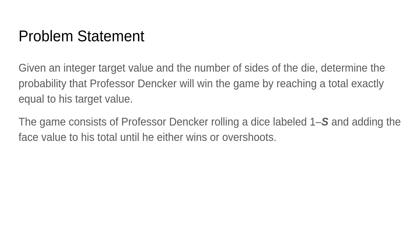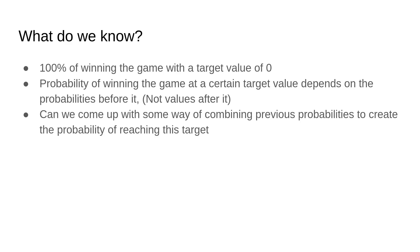You might think the probability converges to 1/s for large target values, which is true, but not fast enough to use directly. We know there's a 100% chance of winning with a target of 0 since the score starts at 0. Intuitively, the probability of winning at a certain target depends on the probabilities for smaller values — not on future values.